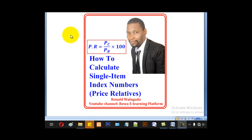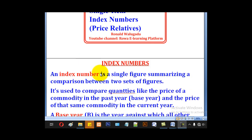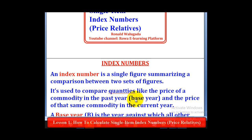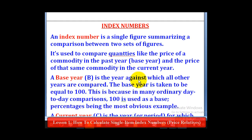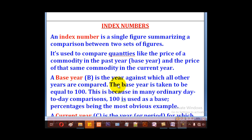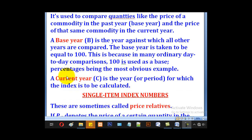Hello viewers, this is Wagodaro taking you through this tutorial on how to calculate single item index numbers or price relatives. An index number is a single figure summarizing a comparison between two sets of figures. It's used to compare quantities like the price of a commodity in the base year and the price of the same commodity in the current year. The base year is taken to be equal to 100, because in many ordinary day-to-day comparisons 100 is used as a base, percentages being the most obvious example. The current year is the year for which the index is to be calculated.